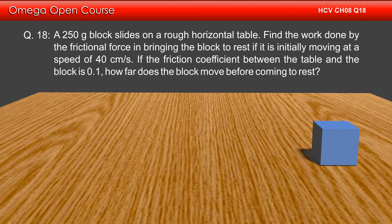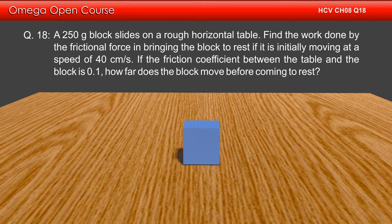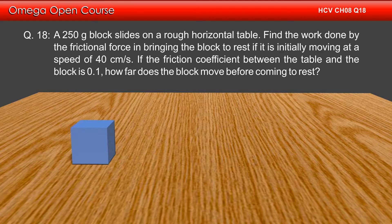A 250 gram block slides on a rough horizontal table. Find the work done by the frictional force in bringing the block to rest if it is initially moving at a speed of 40 cm per second. If the friction coefficient between the table and the block is 0.1, how far does the block move before coming to rest?